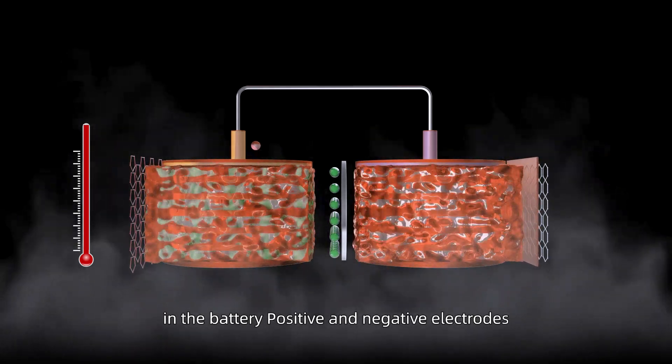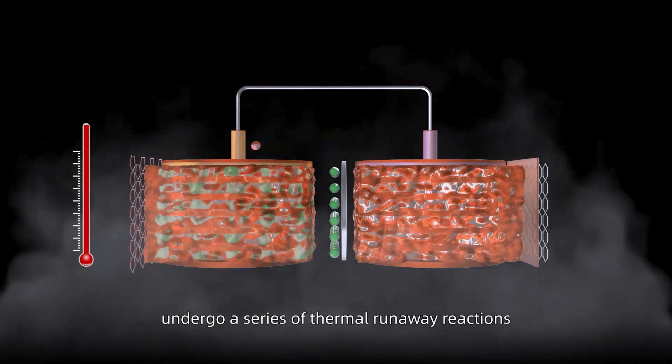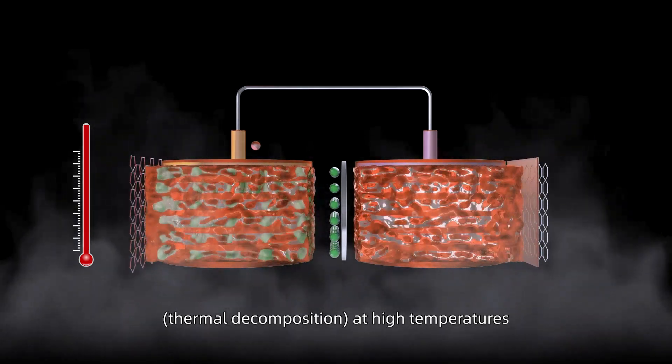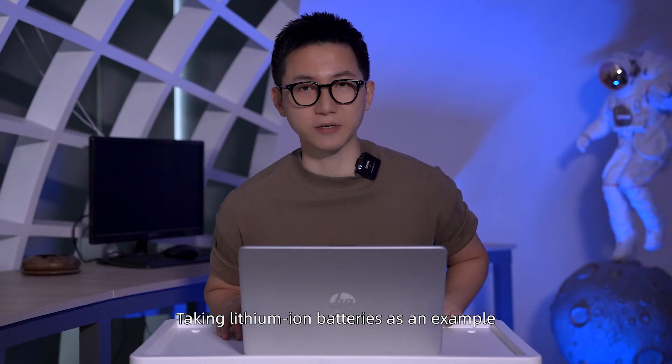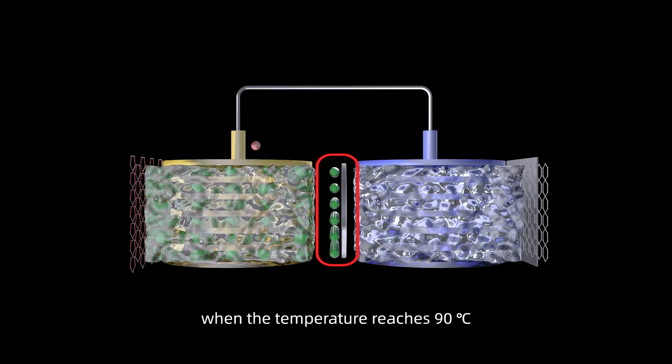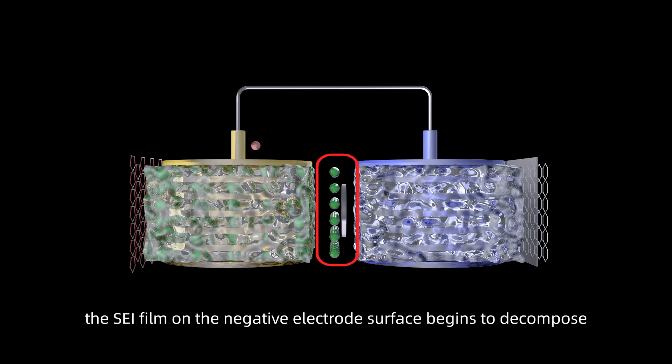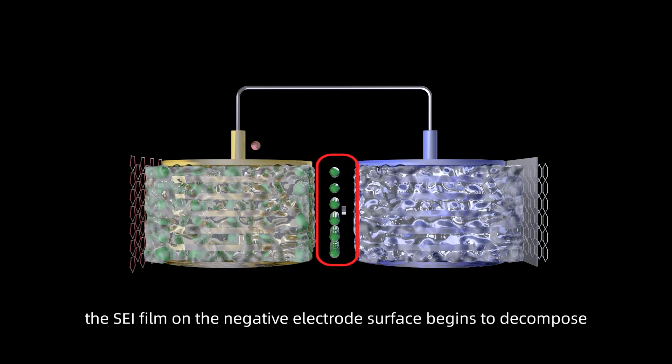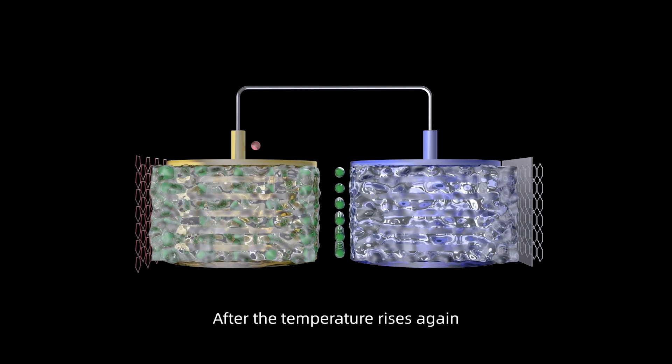The SEI film and electrolyte on the surface of the negative electrodes undergo serious thermal runaway reactions at high temperatures. Taking lithium-ion batteries as an example, when the temperature reaches 90 degrees, the SEI film on the negative electrode surface begins to decompose.